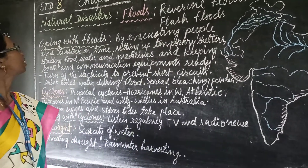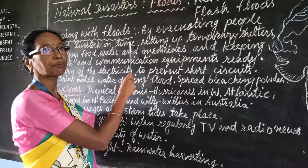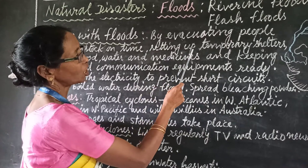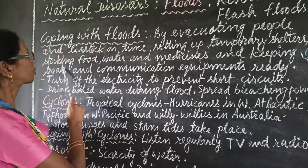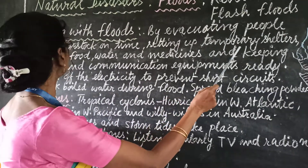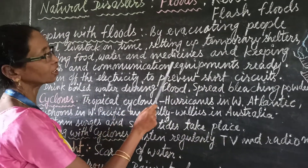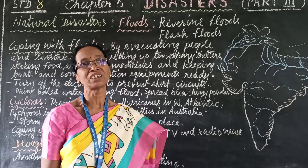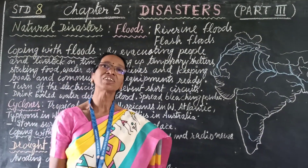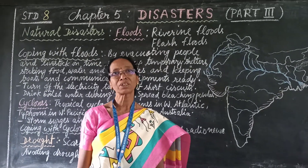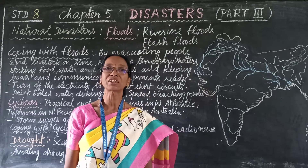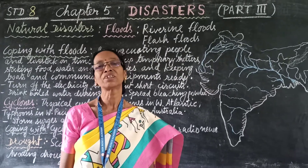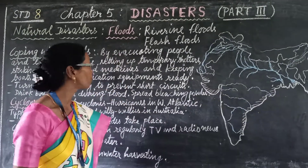How to cope with floods? By evacuating people and livestock on time, setting up temporary shelters, stocking food, water and medicines, and keeping boats and communication equipment ready. If an area is a flood-prone zone or people are living along rivers, this preparation should be done before the commencement of a flood to reduce suffering and damage to life and property.